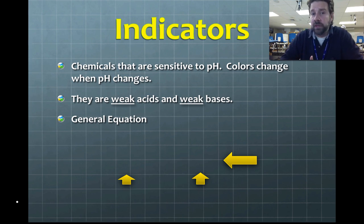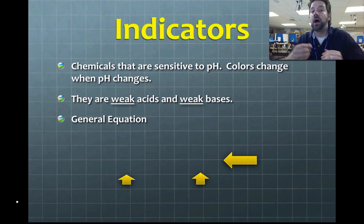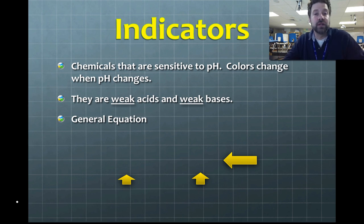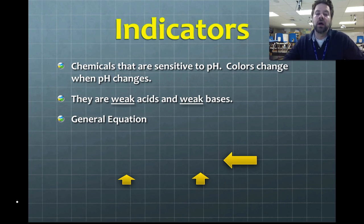Litmus paper comes from a particular organism called a lichen. A lichen will change color when immersed in water that has a high hydronium ion concentration — it changes to red when immersed in acid and changes back to blue when in a basic solution. Chemically speaking, indicators are chemicals that are weak acids or weak bases.